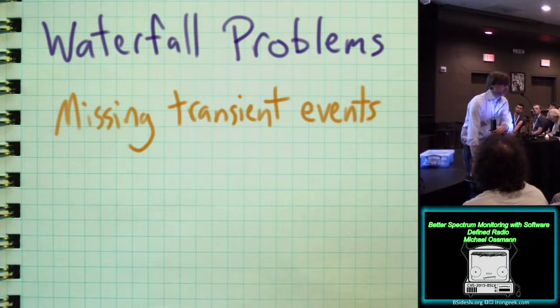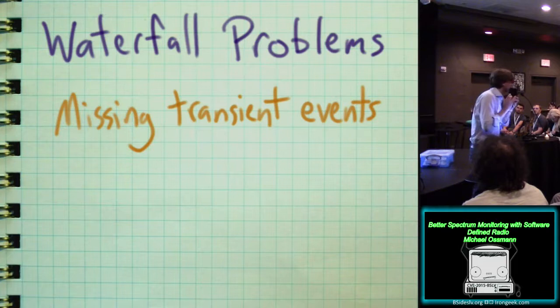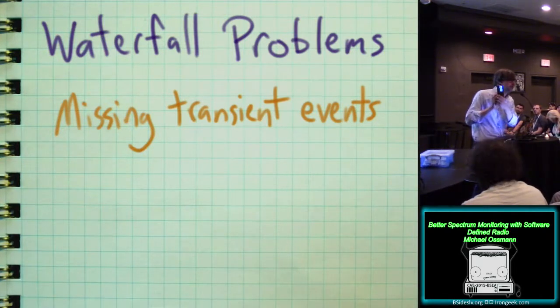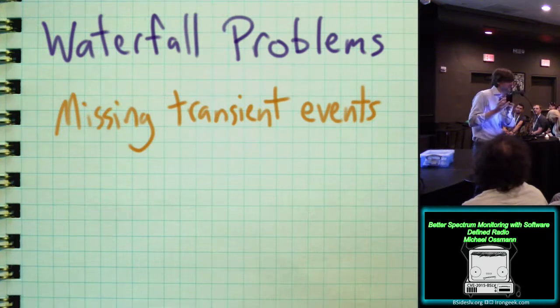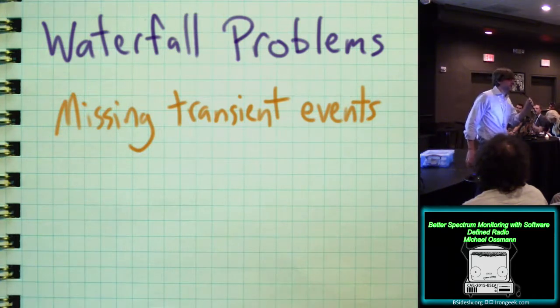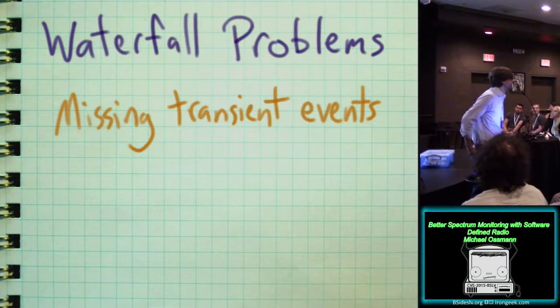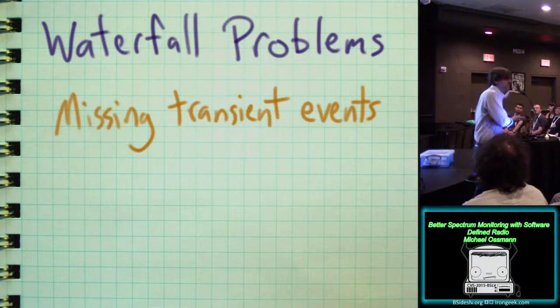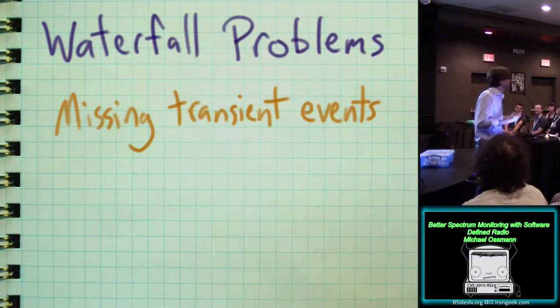It's measuring the signal on the antenna 20 million times per second. Okay, 20 million, it's a big number. How many horizontal rows are in this LCD display, or are in the display of any display on which you're watching a waterfall plot? 320. Jared knows the answer exactly, of course. Generally speaking, you're going to be looking at a waterfall plot that has maybe a few hundred lines at the most.